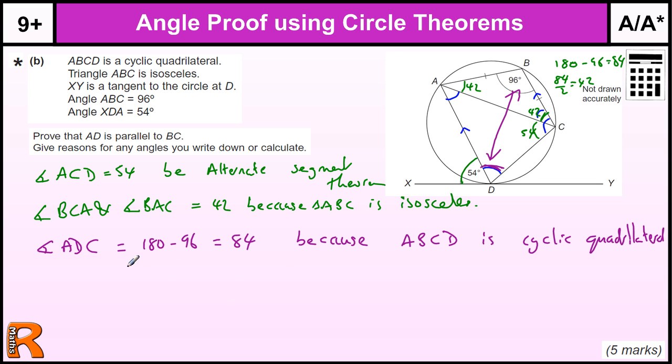Okay, and that's pretty much it. So we've got, since angle BCD equals 96, and angle ADC plus angle BCD equals 180.